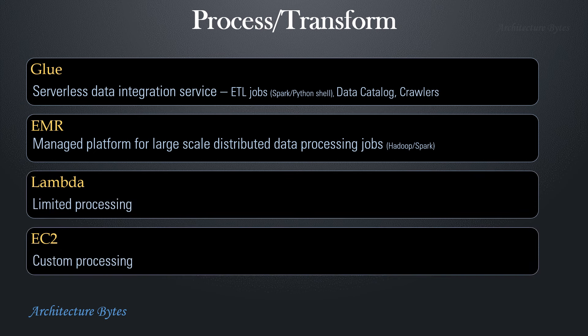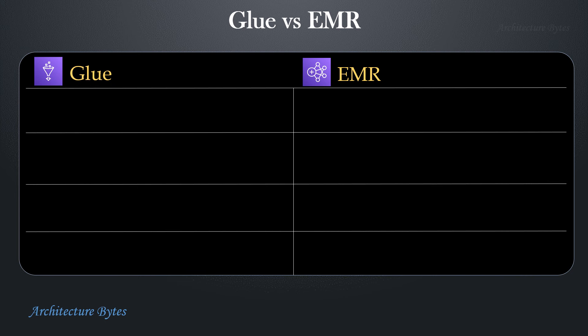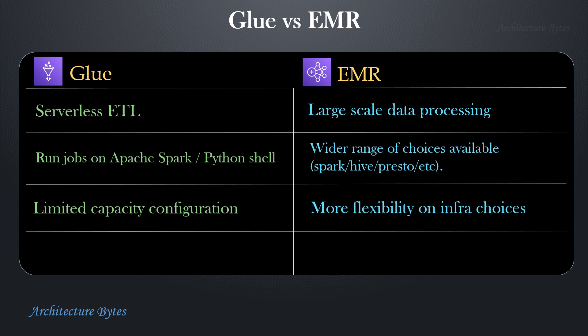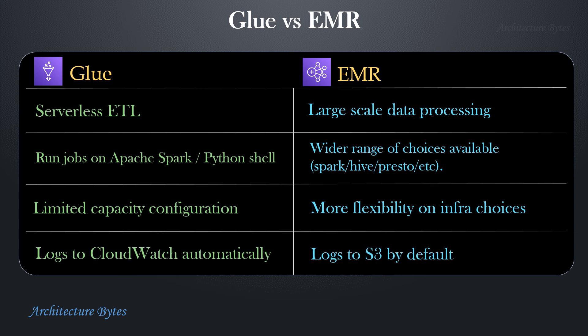On the surface, Glue and EMR seem to have overlapping capabilities. However, let's look at the differences. Glue is primarily used as a serverless ETL service, while EMR is for large-scale data processing. Glue runs jobs on Apache Spark or Python shell, while EMR has a wider range of choices available. Glue provides limited capacity configuration, while EMR has more flexibility on infrastructure choices. Glue logs to CloudWatch automatically, while EMR logs to S3 by default.